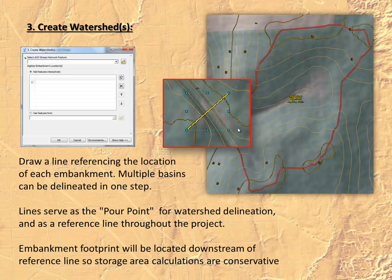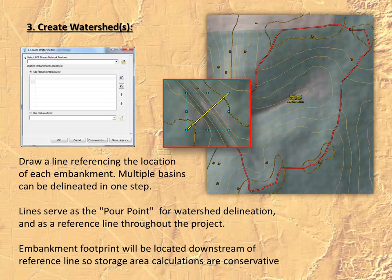Number three is to create watershed or watersheds, depending on how many you wish to incorporate into your project. You basically draw a line referencing the location of each embankment. Multiple basins can be delineated in one step if you start at the downstream most portion and work your way upstream. They'll be nested within one watershed and numbered with individual unique sub-basin IDs. This line serves as a pour point for watershed delineation, reflecting a dam effectively, and then serves as a reference line for the toe of your embankment throughout the project.